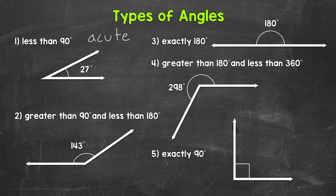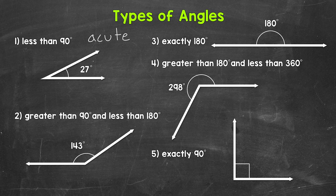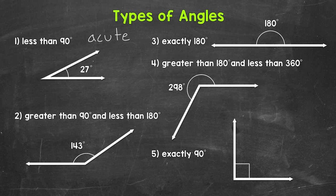Let's move on to number two, where we have an angle that measures 143 degrees. This is an example of an obtuse angle. Obtuse angles are greater than 90 degrees and less than 180 degrees.